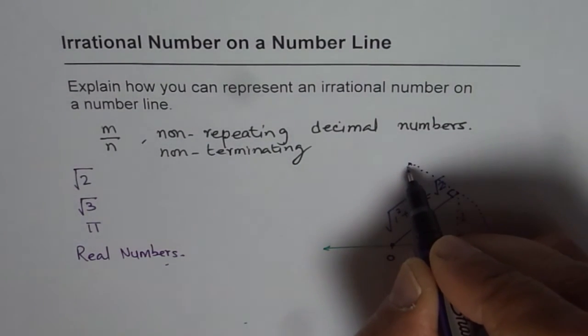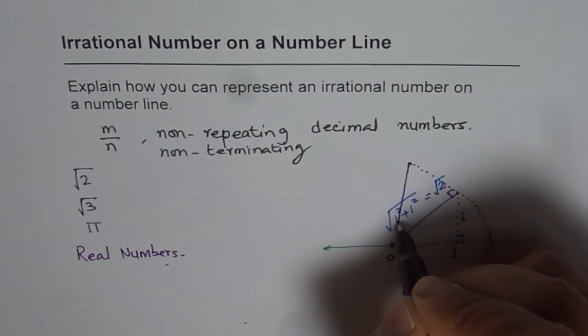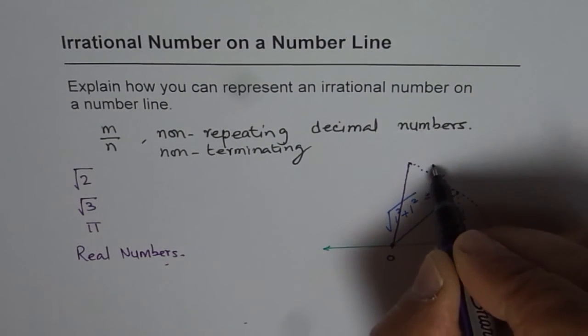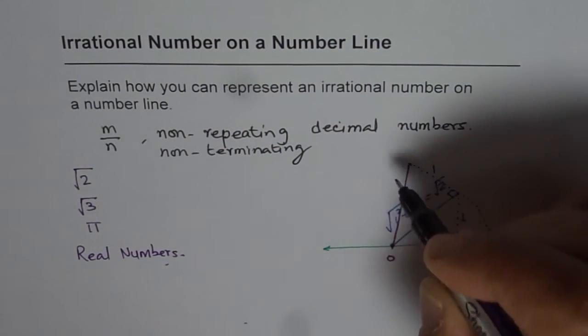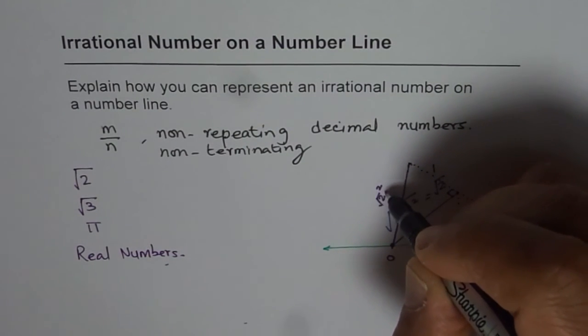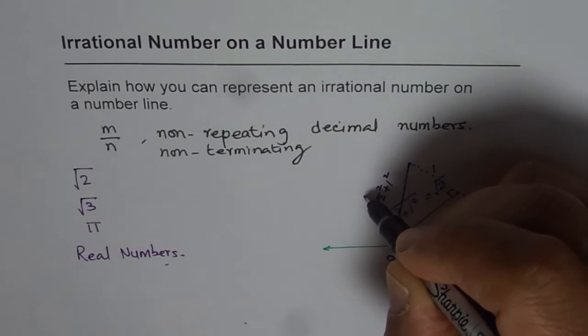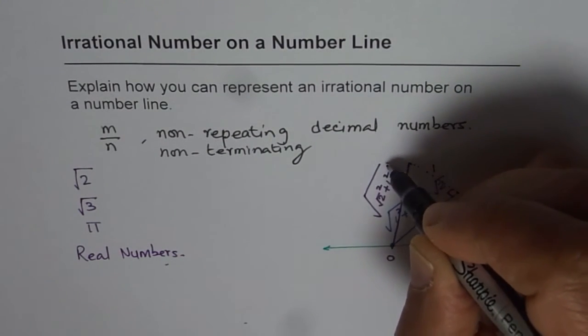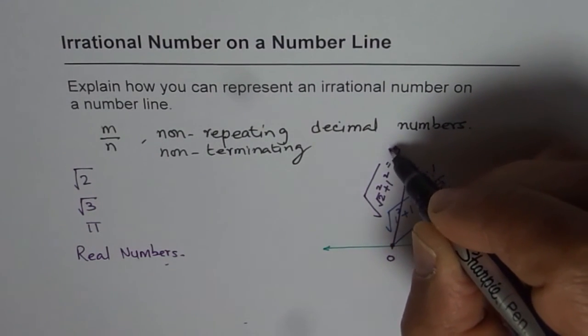then joining these two points will give me length of, this is 1 and this is square root 2. So this length should be square root 2 square plus 1 square square root. And that is equals to square root of 3.